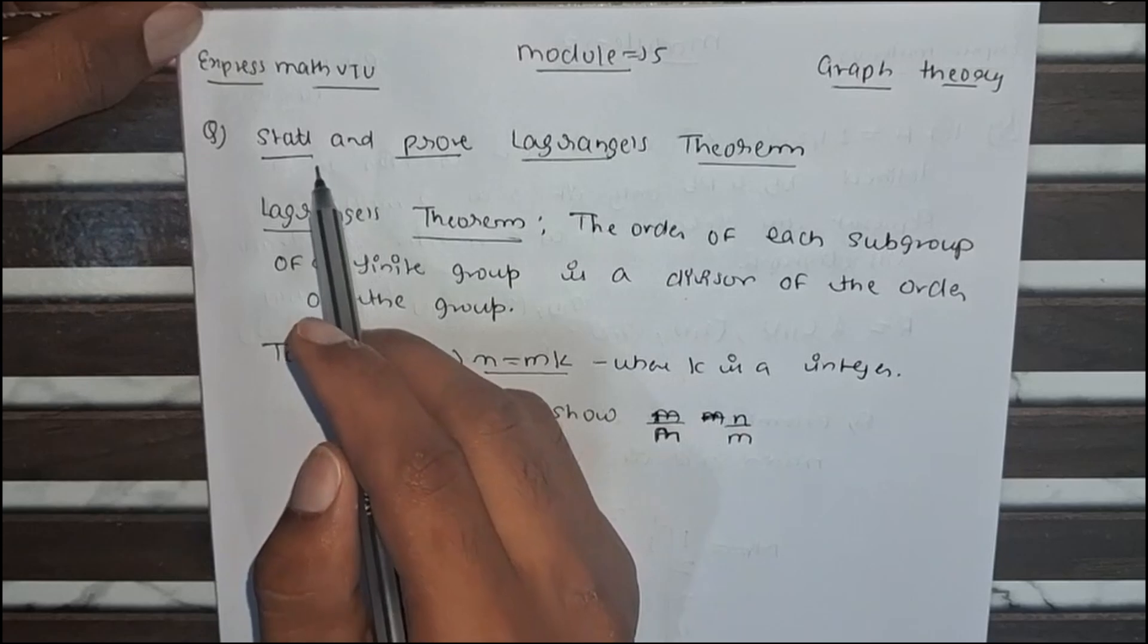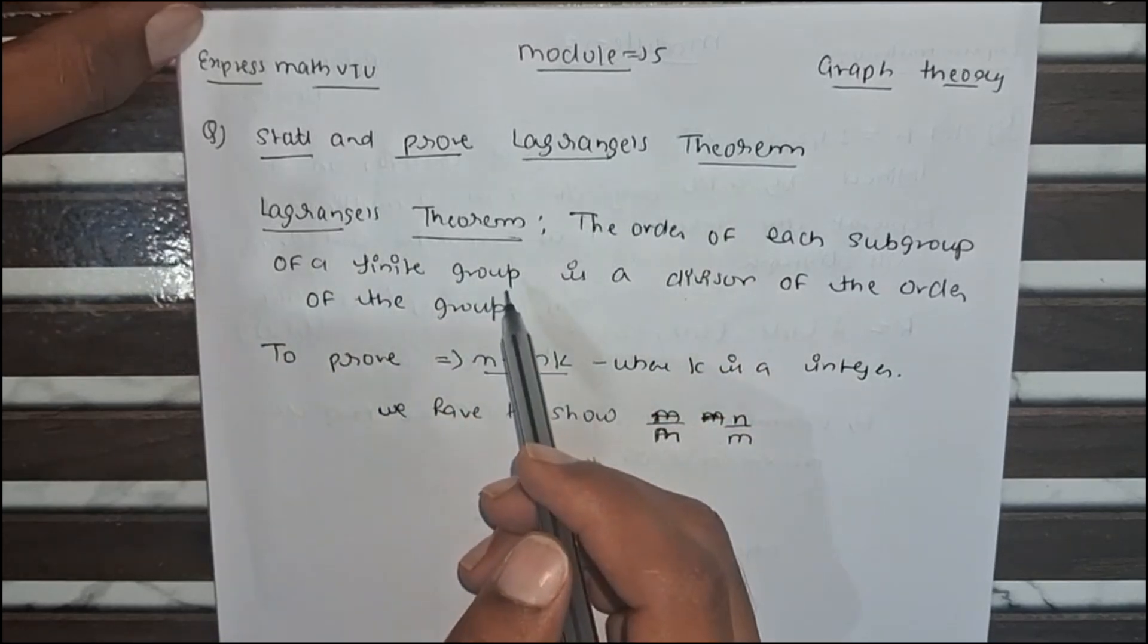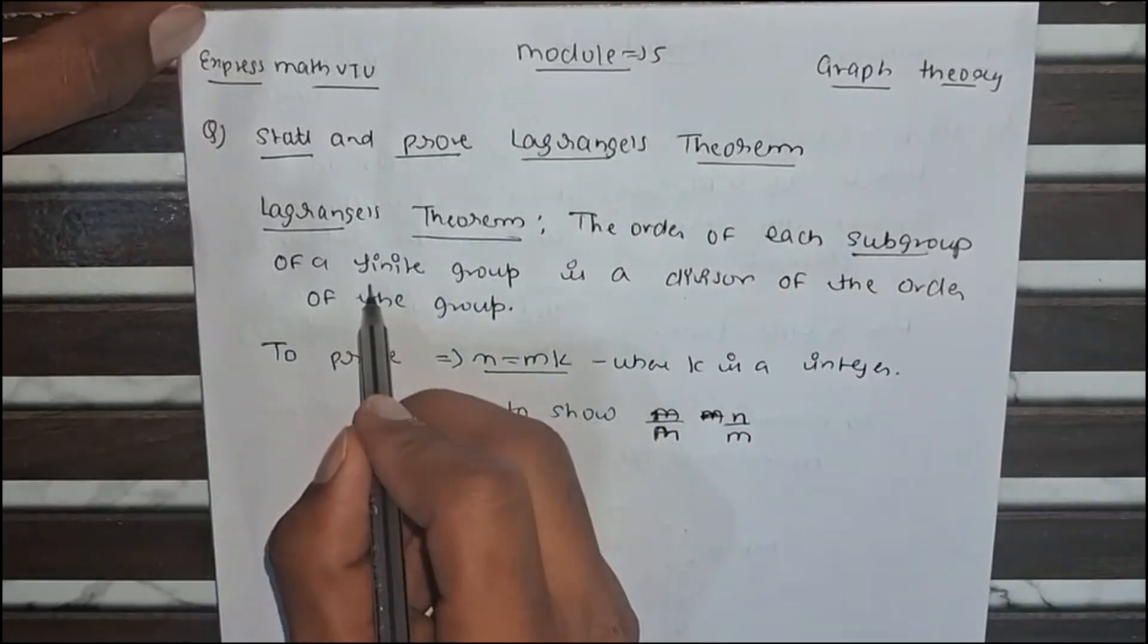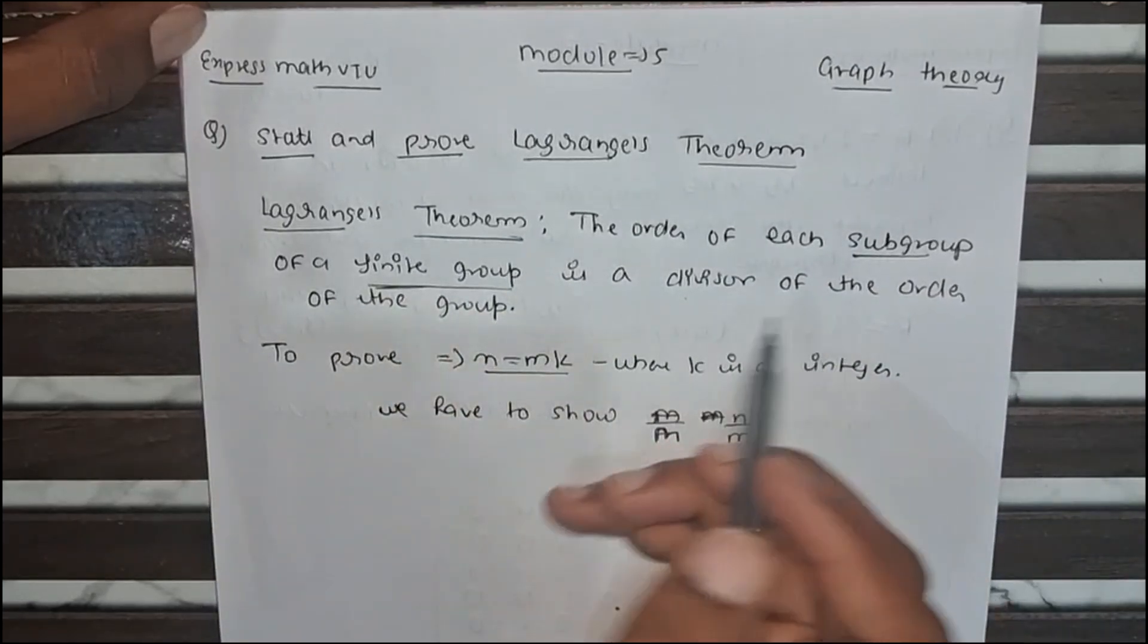So what is the proof? State and prove Lagrange's theorem. Lagrange's theorem states that each subgroup of a finite group is a divisor of the order of the group.